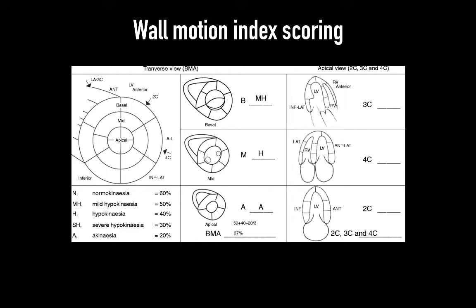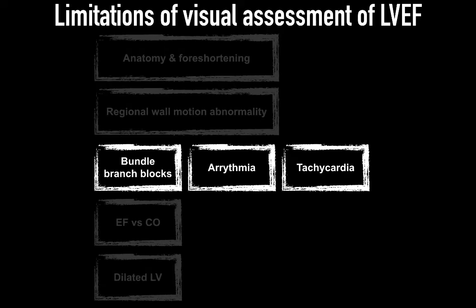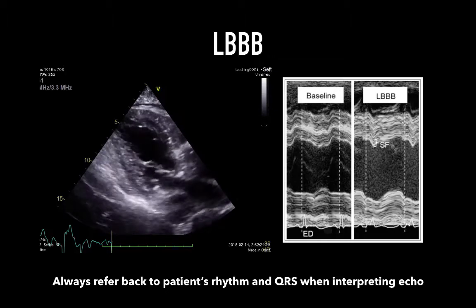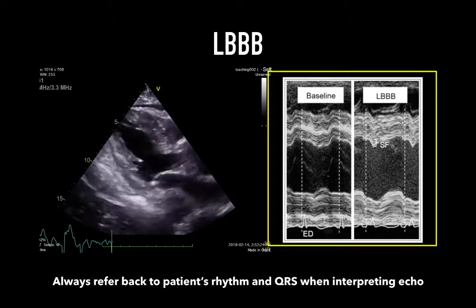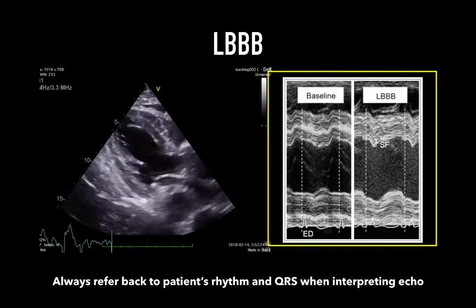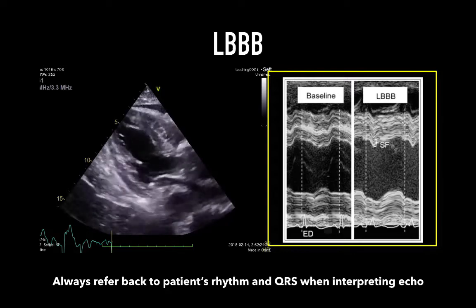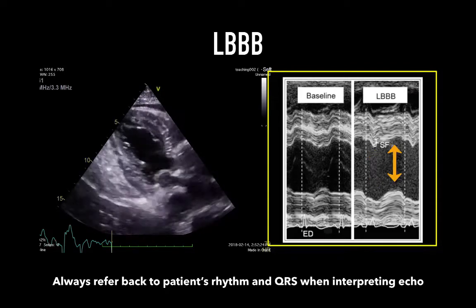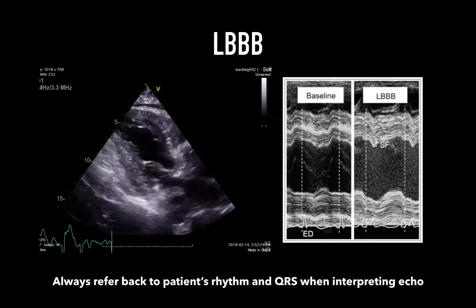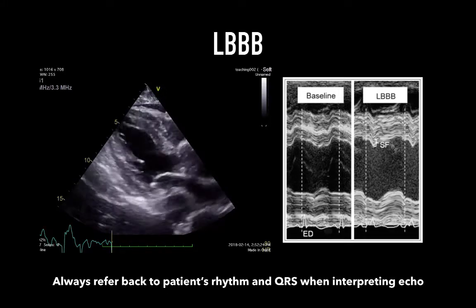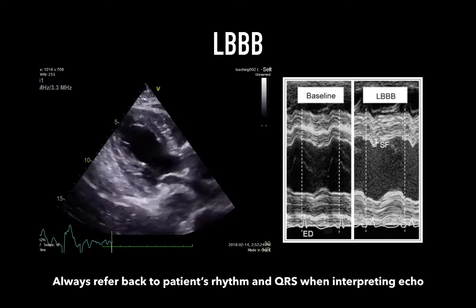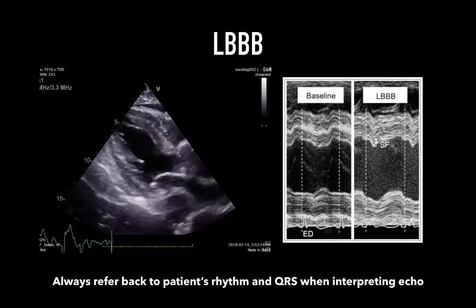Arrhythmias and conduction abnormalities can also cause significant echo abnormalities. With left bundle branch block, M-mode shows that at baseline both the septum and inferior wall move simultaneously, producing a visible cavity decrease. In LBBB, the septum contracts much earlier than the inferior wall and recoils before the posterior wall contracts, leading to inefficient contraction. Bundle branch blocks can look like septal akinesis, depressed EF, or in some cases make absolutely no changes to the echocardiographic appearance. These changes may or may not have any impact on hemodynamics.